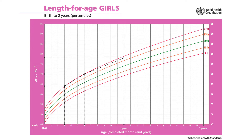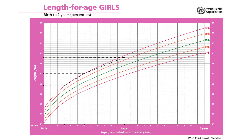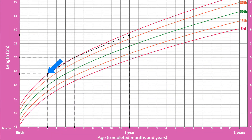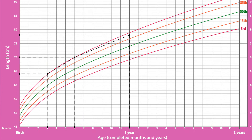This graph shows Anita's length for age plotted three times over a few months. At the first point, Anita was three months of age and sixty-four centimeters in length. At the second point, Anita was seventy centimeters in length at six months of age. Finally, at the third point, she was seventy-eight centimeters in length at one year of age.